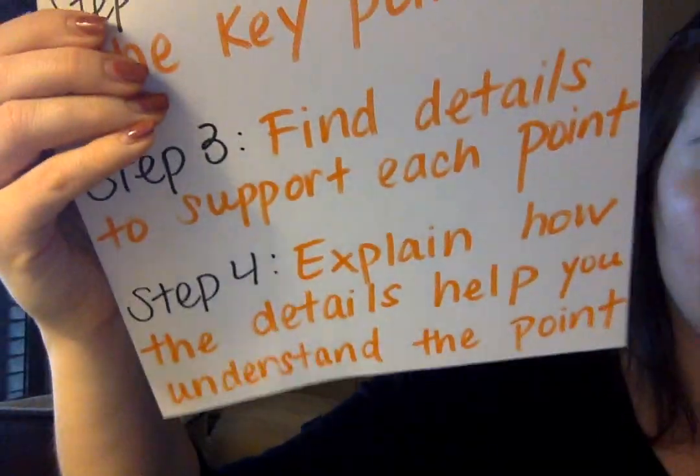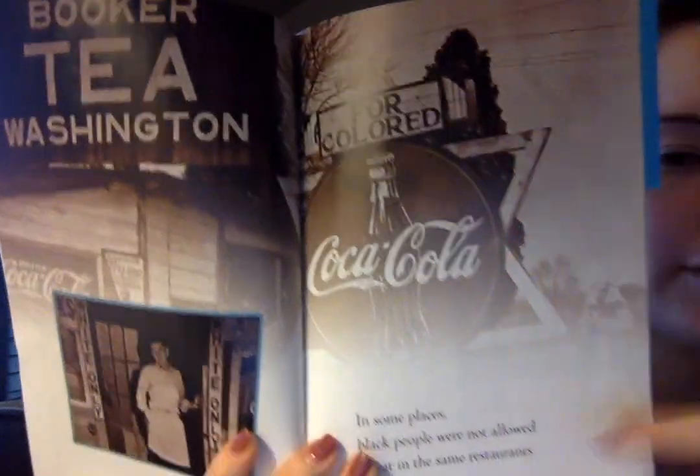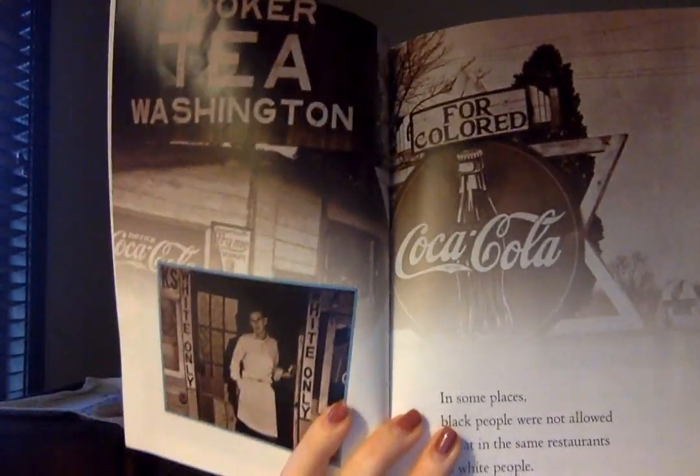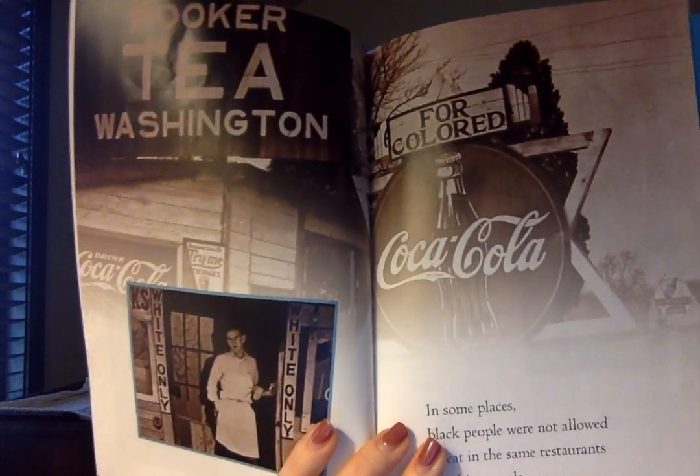Step four, explain how the details help you understand the point. The details in this picture — the parts of the signs that say 'white only' and 'for colored' — show that people supported the segregation of restaurants. Great job! Now it's your turn. Go ahead and open up Google Classroom so I can see how you guys are growing your brains. Pause this video if you need to.